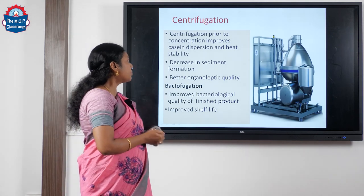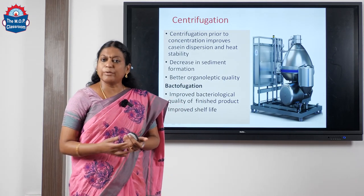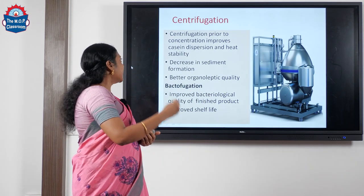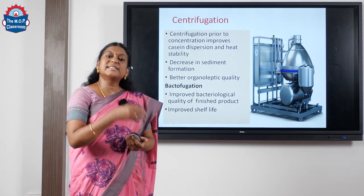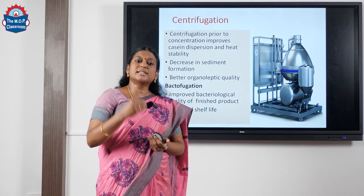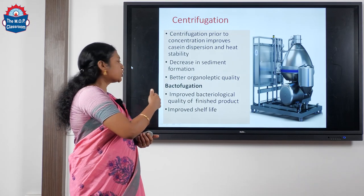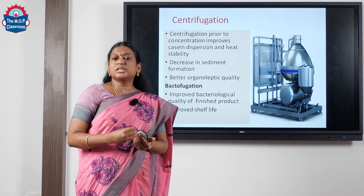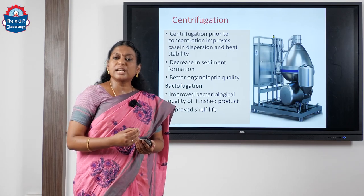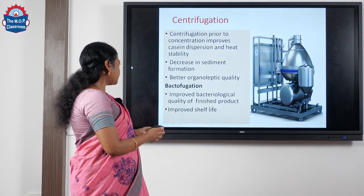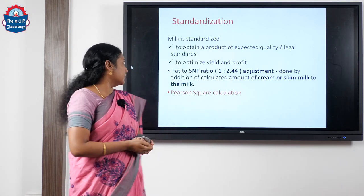The centrifugation process prior to our concentration — that is, prior to evaporation — improves the casein dispersion and heat stability of our product. The centrifugation process is now usually clubbed with Bacto-fugation. In Bacto-fugation, improved bacteriological quality is obtained because bacteria and spores are made to sediment out. So we have a better shelf life if we do filtration or centrifugation.